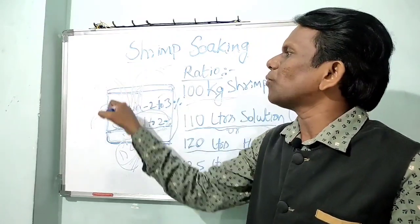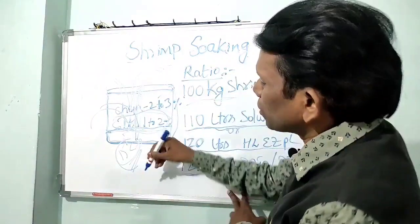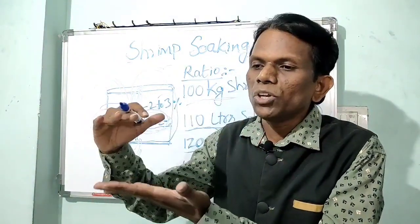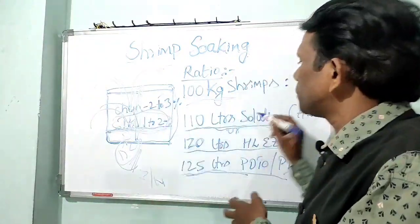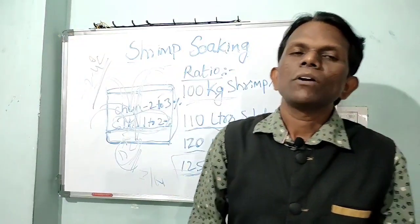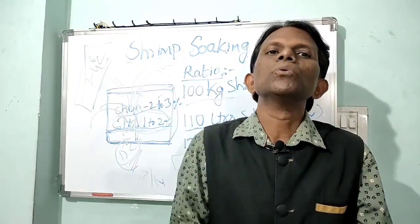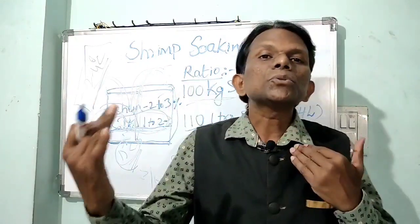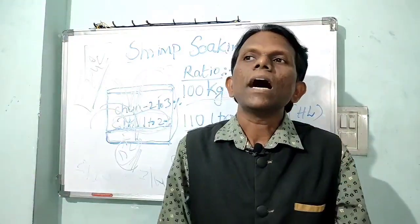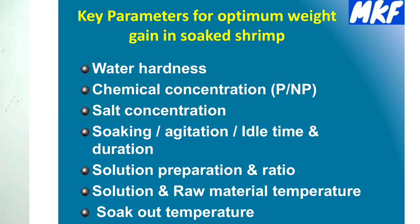Once the salt is completely dissolved, fulfill the required total volume with water and ice. The operator must choose the correct water-to-ice ratio so that the final 125-liter solution achieves a temperature of 2 to 4°C before soaking begins. At this temperature, the shrimp will absorb and retain more water. You may use 50% water and 50% ice, or 60% ice and 40% water — the final goal is a solution temperature of 2 to 4°C.